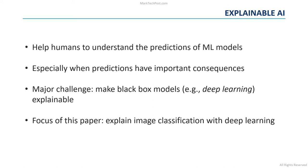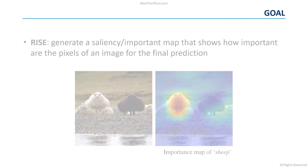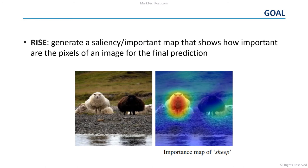Today, we are going to focus on explaining classification decisions made by a deep neural network on natural images. The goal of this paper is to use the RISE method to generate a saliency map or importance map that shows how important each pixel of an input image is for the final prediction of the neural network.